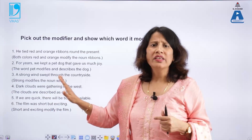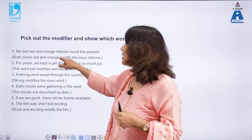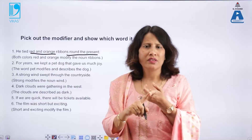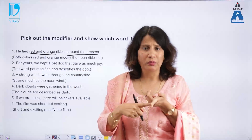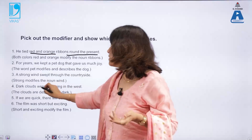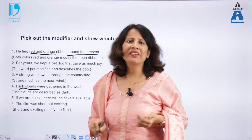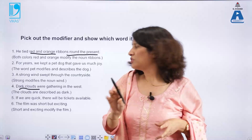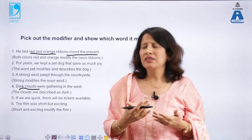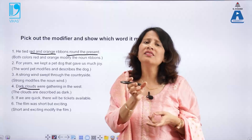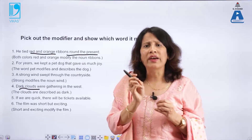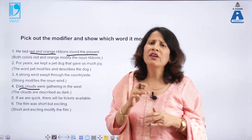Now for adjective modifier examples: in 'He tied red and orange ribbons around the present,' 'ribbons' is the noun and 'red' and 'orange' are adjective modifiers describing their color. In 'Dark clouds were gathering in the west,' 'clouds' is the noun and 'dark' is an adjective modifier. Understanding adjective and adverb modifiers helps us use language accurately and avoid errors.